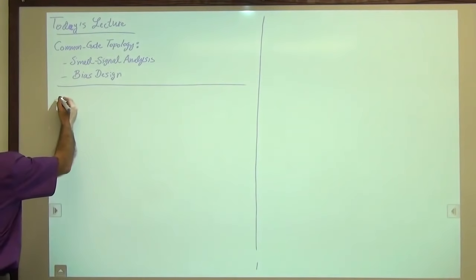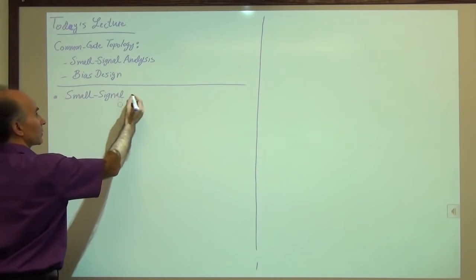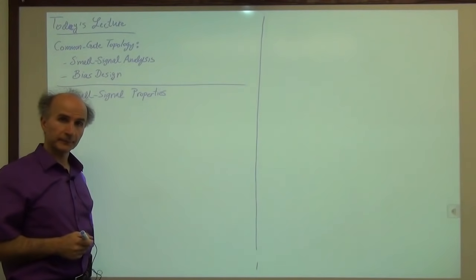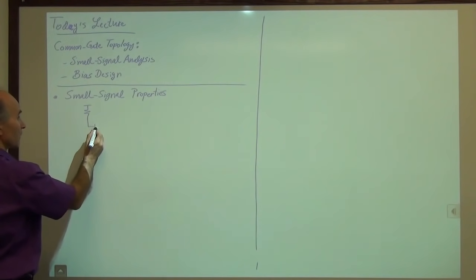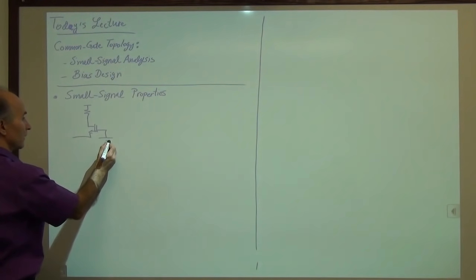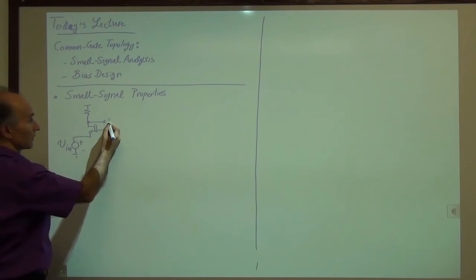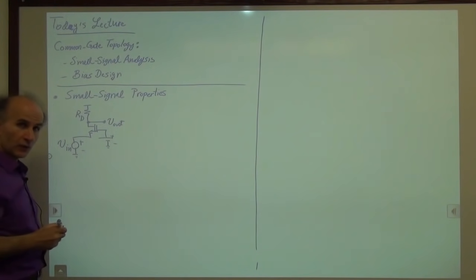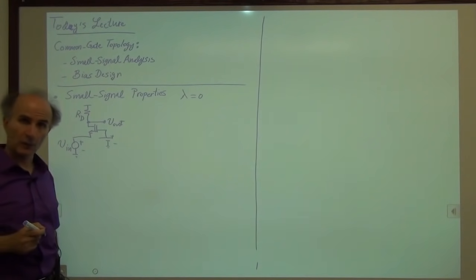Let's begin and look at the small signal properties. As usual, we are interested in three primary quantities: the voltage gain, the input impedance, and the output impedance. We start out with the circuit in its simplest form. We apply a voltage source Vin at the input, and we are interested in Vout with respect to ground. We have a resistor Rd here. We assume that channel length modulation is zero, so lambda is zero. We proceed and draw the small signal model of the circuit.